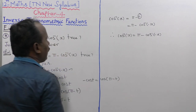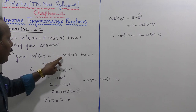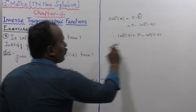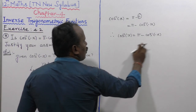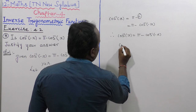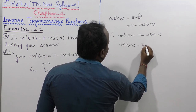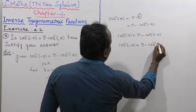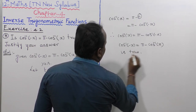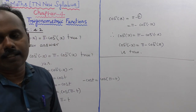So cos inverse of x equals pi minus t. Since t equals cos inverse of minus x, substituting back: cos inverse of minus x equals pi minus cos inverse of x. Therefore the given statement is true.